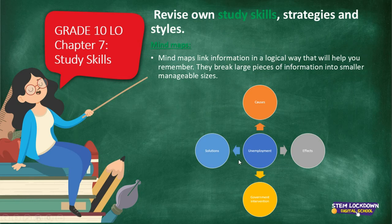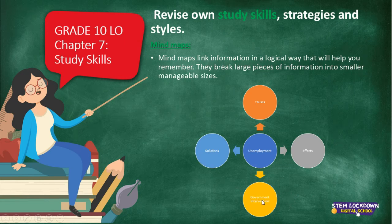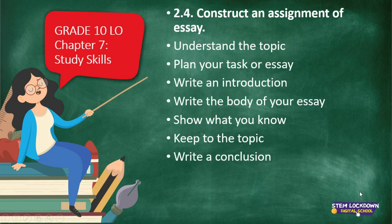For example, if you're given an essay topic on unemployment in South Africa, your mind map would have unemployment in the middle, with branches for reasons for unemployment such as jobs not being available or seasonal unemployment; the effects of unemployment; government intervention to curb unemployment; and solutions such as creating more jobs or having more entrepreneurial subjects in school. Mind maps also help you keep to the topic when writing your essay, which can otherwise be difficult when you have too many ideas.